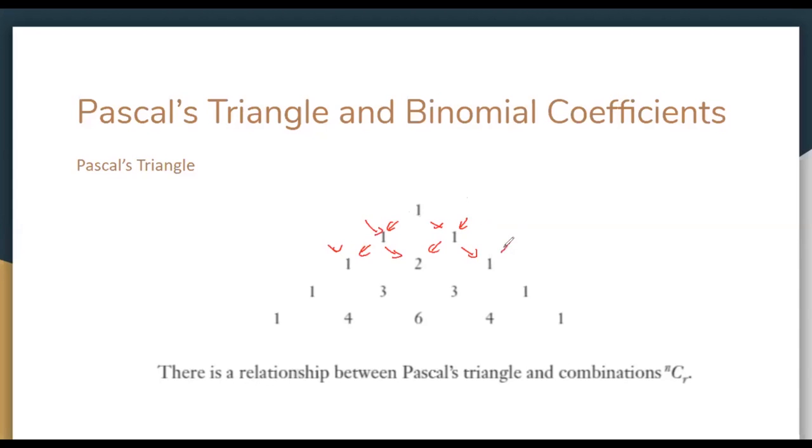One and zero goes to one, and we just keep going down adding these elements up as we go. Here we get the bottom line: zero plus one goes to one, then one plus three goes to four, three plus three goes to six, three plus one goes to four, and one plus zero goes to one.